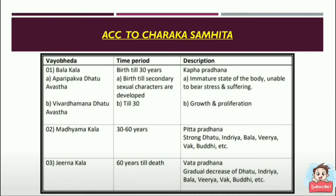According to Charaka Samhita, he also classified into 3 parts based on time period. From birth till 30 years it is called Balakala and is Kapha Pradhana. This is further divided into 2 sub-classifications: from birth till secondary sexual characters develop, called Aparipakvata Dhatu Avastha — the immature state of the body, unable to bear stress and suffering.